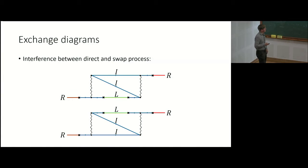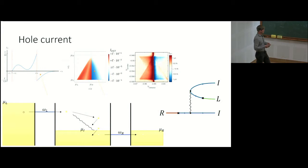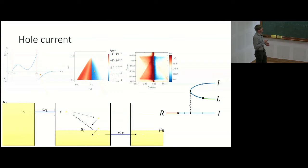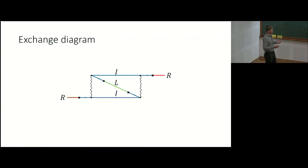In the third process, the hole of the electron-hole pair created in the intermediate region escapes through the detector, and this diagram contributes exactly in the outline of the lower blue triangle as seen in the experiment. There is also an exchange diagram for this process, which is harder to interpret but guarantees that when the screening length goes to zero the Pauli principle is restored and the current goes to zero.